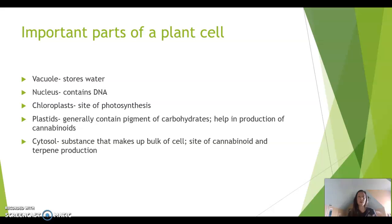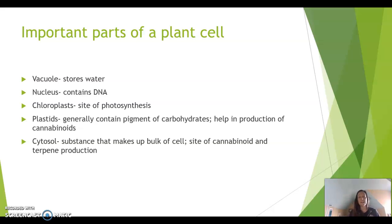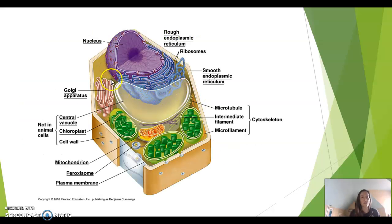Here are some important parts of the plant cell summarized. You should know the vacuole — keep your plants watered so they will stay upright. The nucleus contains DNA. The chloroplast is the site of photosynthesis; the plant needs to do photosynthesis to do all the things it does, including making cannabinoids, so keep your plant green and in the sun. Plastids generally contain pigments or carbohydrates and help in the production of cannabinoids — sometimes these are chloroplasts, sometimes other pigments. And then we have the cytosol, the substance making up the bulk of the cell — it's the filler stuff everything floats in — and it is the site of cannabinoid and terpene production. Cytosol is sometimes also called cytoplasm.